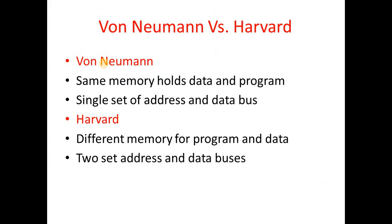Next is a small difference: Von Neumann versus Harvard architecture. In Von Neumann architecture, the same memory holds both data and program instructions — a single set of address and data buses. In Harvard architecture, there are different memories for program and for data, each with separate address lines and data buses.